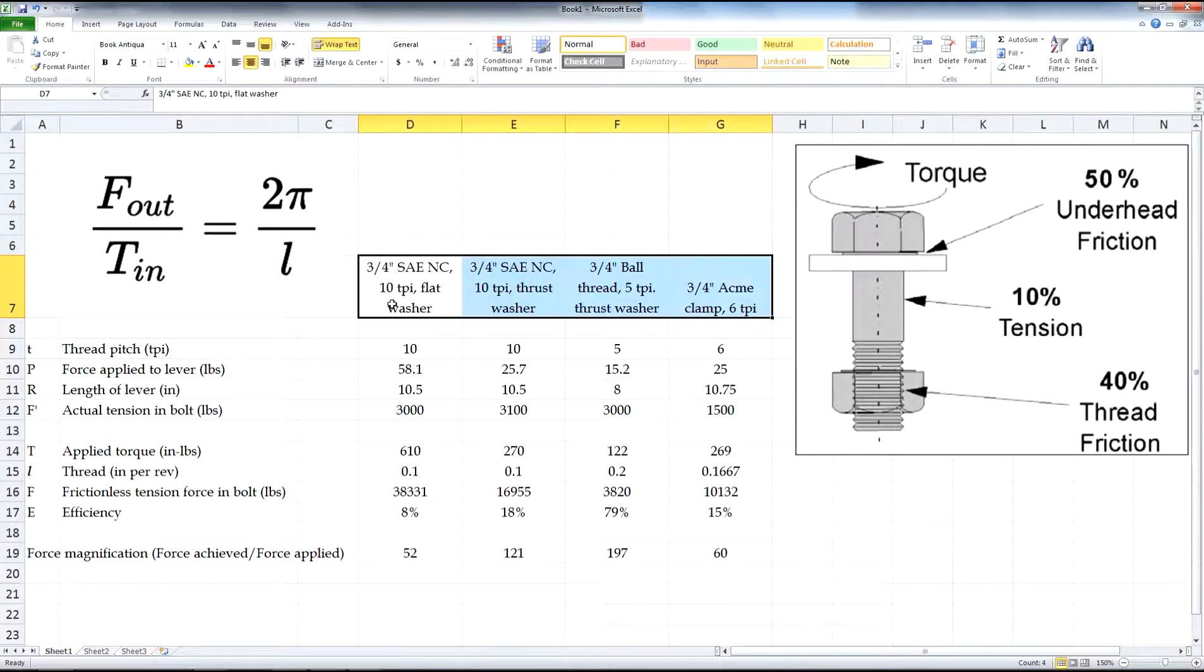So, we ran these four tests to see what we might get. The base test was three quarters inch, national course. What we found out is that we have 8% efficiency. A little worse than the case in the picture over here. We took out the flat washer and put a thrust washer in, trying to eliminate this 50% tension. We actually doubled the efficiency. It worked twice as well. But, we still only ended up with 18%. So, I'm not sure exactly where our losses were, but that 18% has to be mostly in the thread friction.